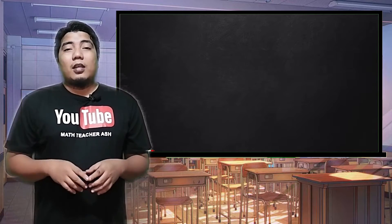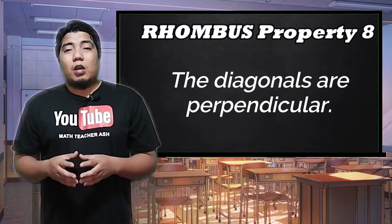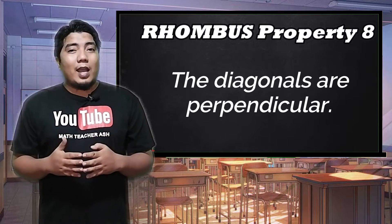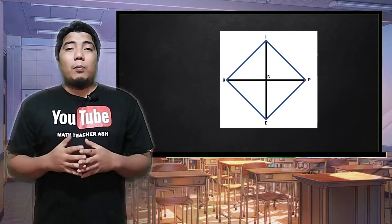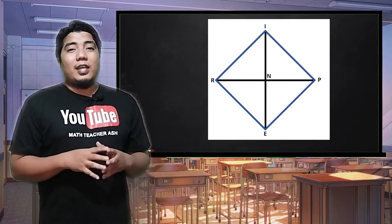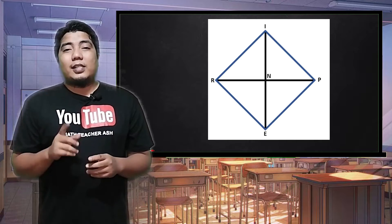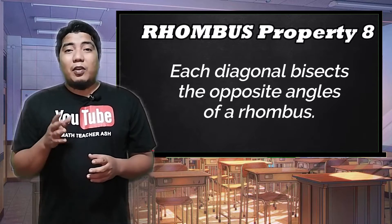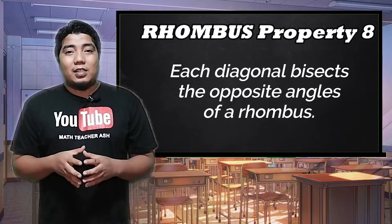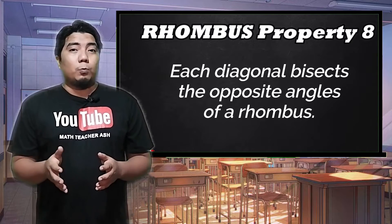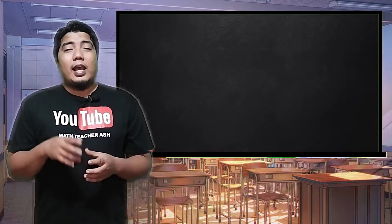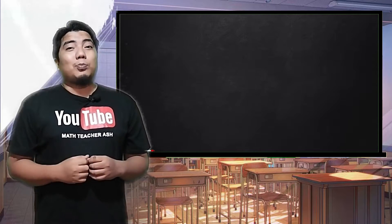The second additional property is that the diagonals of the rhombus are perpendicular, meaning when the two diagonals intersect, they form a right angle. And finally, the third additional property is that each diagonal of a rhombus divides the opposite angles into half, or into two. In order for you to learn more about these properties, let's go to our discussion board.